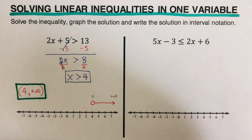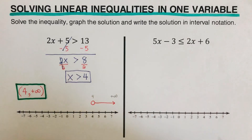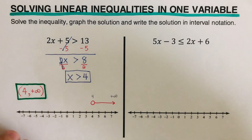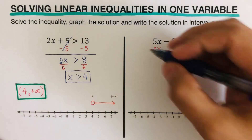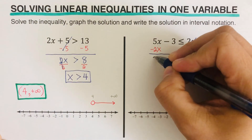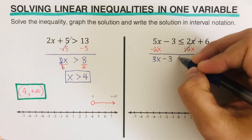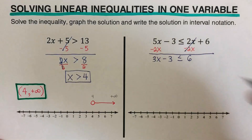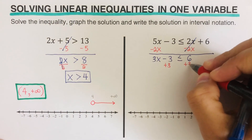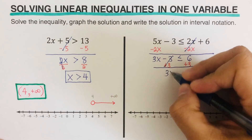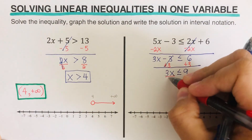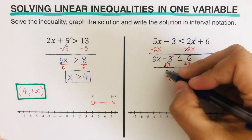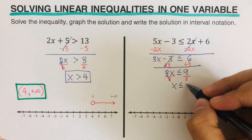Okay, so we go over the next problem. We make sure that x is isolated on one side — usually we want it to be on the left side. We go ahead and subtract 2x from both sides, so we are left with 3x minus 3 less than or equal to 6. Then we add 3 to both sides, so we are left with 3x is less than or equal to 9. Then we divide both sides by 3, so we are left with x is less than or equal to 3.